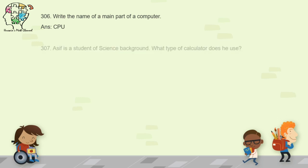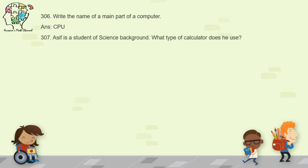Question 307: Asif is a student of science background — what type of calculator does he use? He uses a scientific calculator, because he is a science background student.